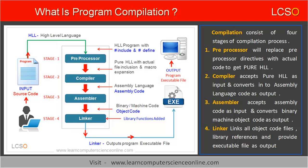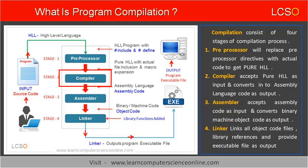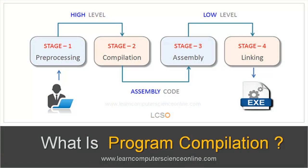These stages are: first, pre-processing; second, compilation; third, assembly; and finally, the fourth stage is linking. In this tutorial, we will cover all four stages of the compilation process in detail. Let us first start with the simple definition of the term program compilation.